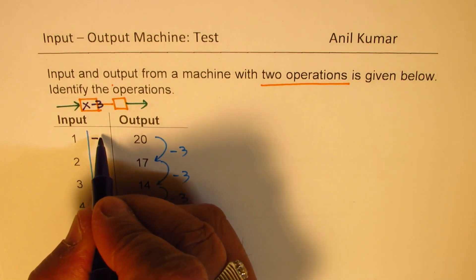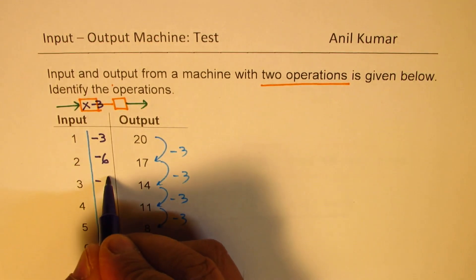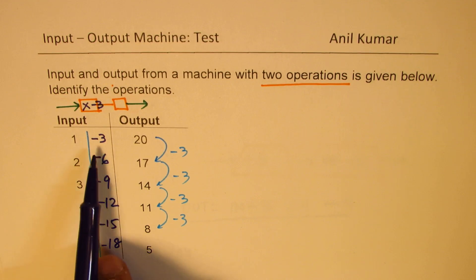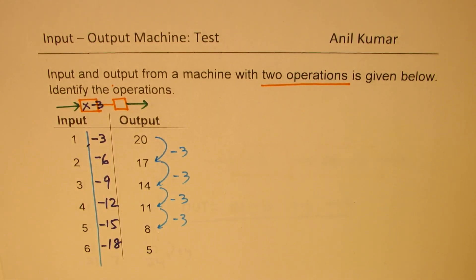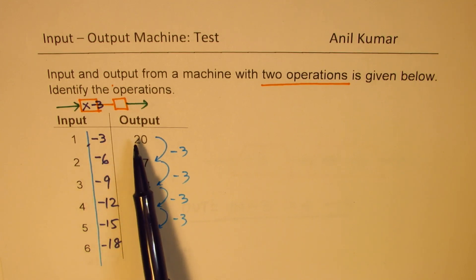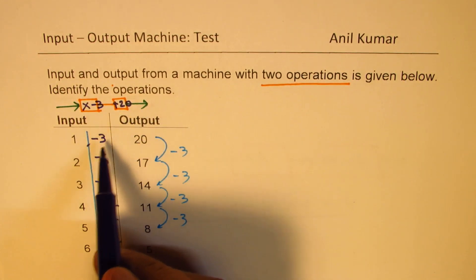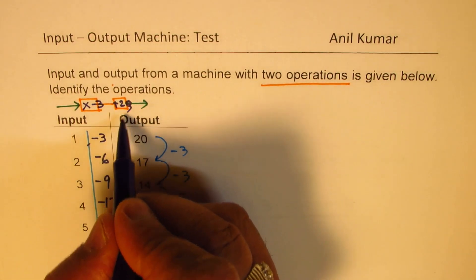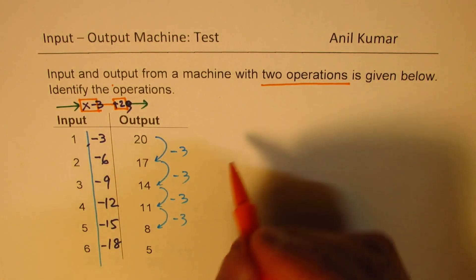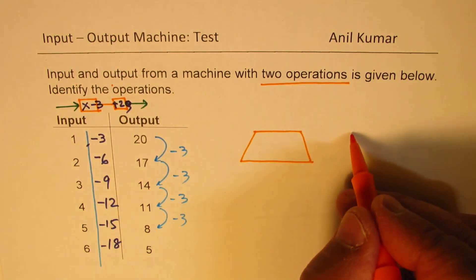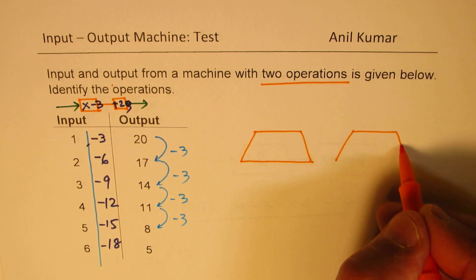Multiplying the inputs by negative 3 gives: −3, −6, −9, −12, −15, −18. Now from −3 how do I get 20? I need to add something. That number is 23: −3 + 23 = 20. So I add 23 in the second step.